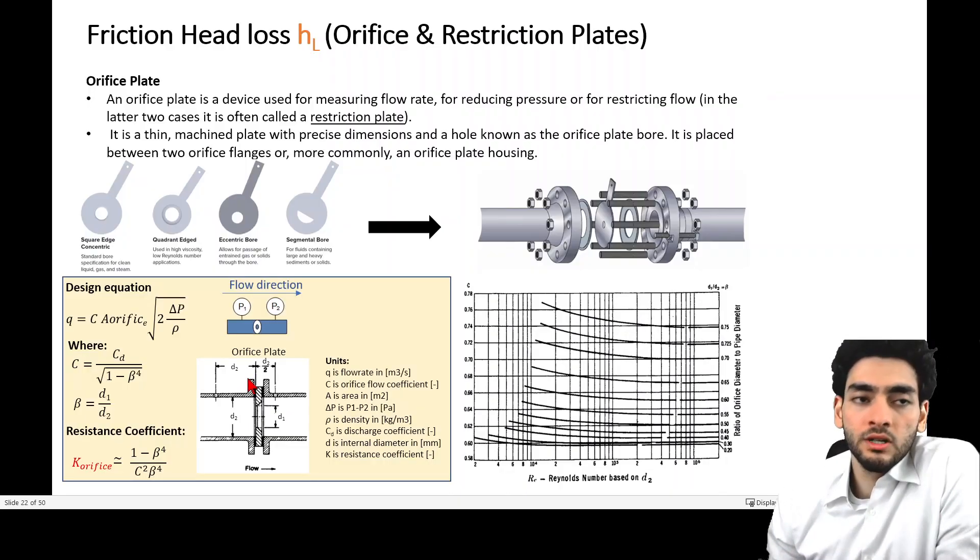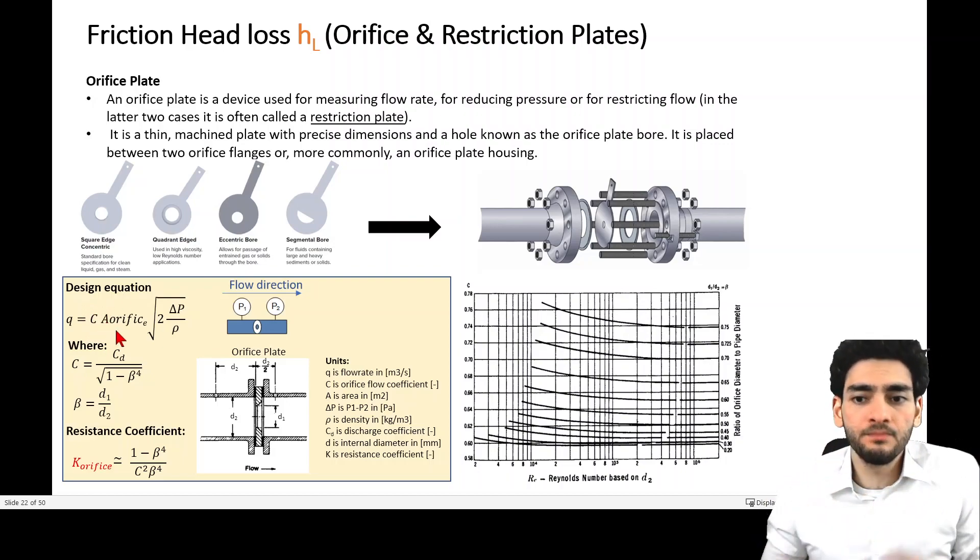According to the Crane handbook, the flow rate that passes through the orifice is equal to an orifice flow coefficient C multiplied by the area of the orifice A, multiplied by the square root of 2g times delta P over rho, all divided by the square root of 1 minus beta to the power of 4.